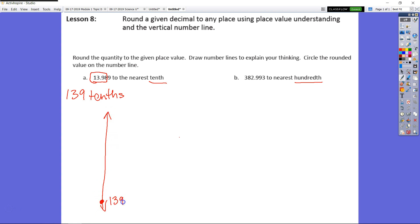So if we have 139 tenths, our other endpoint would just count up one tenth and put us at 140 tenths. And all I did was rename this as tenths. I know that 13 and 9 tenths would be 139 tenths.